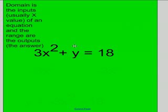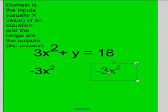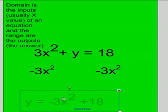So I have this equation: 3x² + y = 18. First, you need to subtract 3x² from both sides so you can get the y by itself to solve this equation. After you subtract 3x², you have y = -3x² + 18.